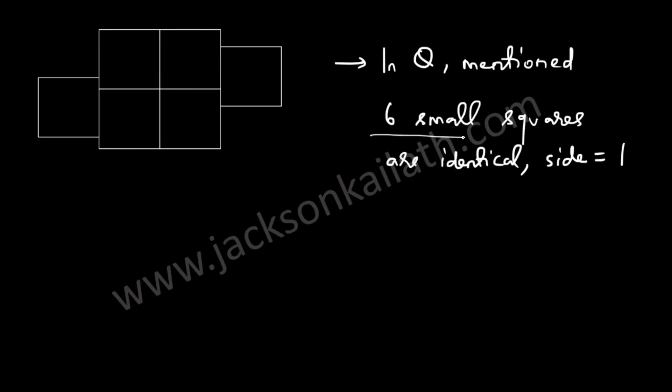In this question we have to find the outer perimeter of this figure. It is given in the question that it's made up of six small identical squares, and the side of each square is given as one unit.